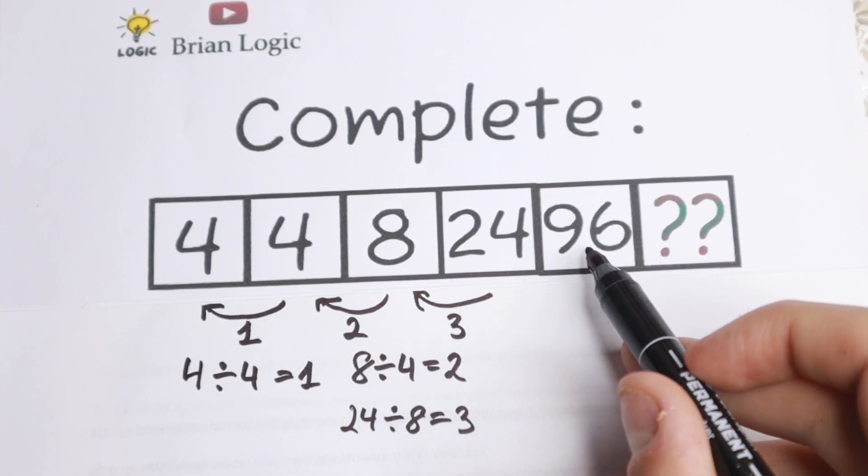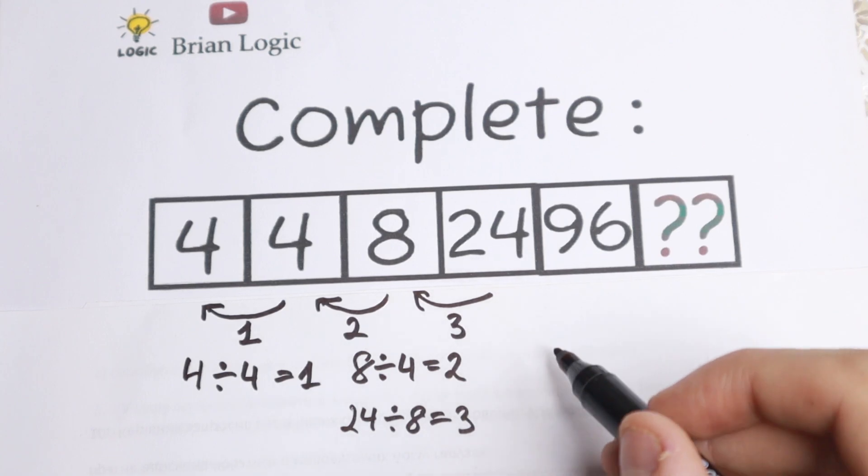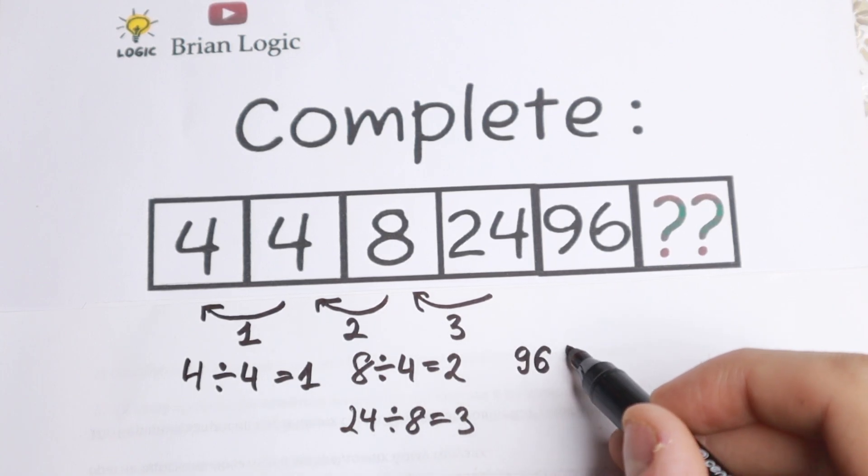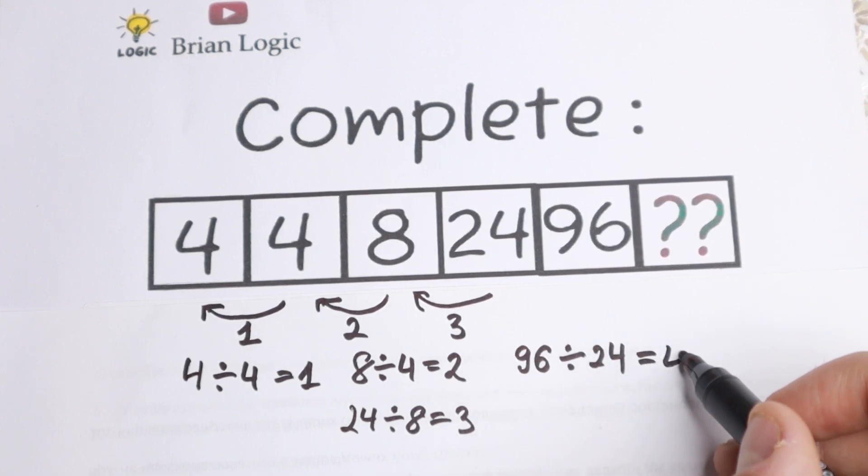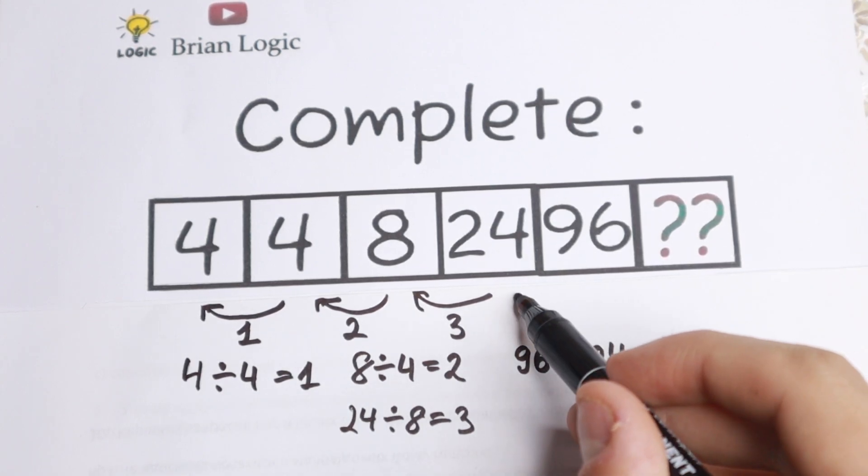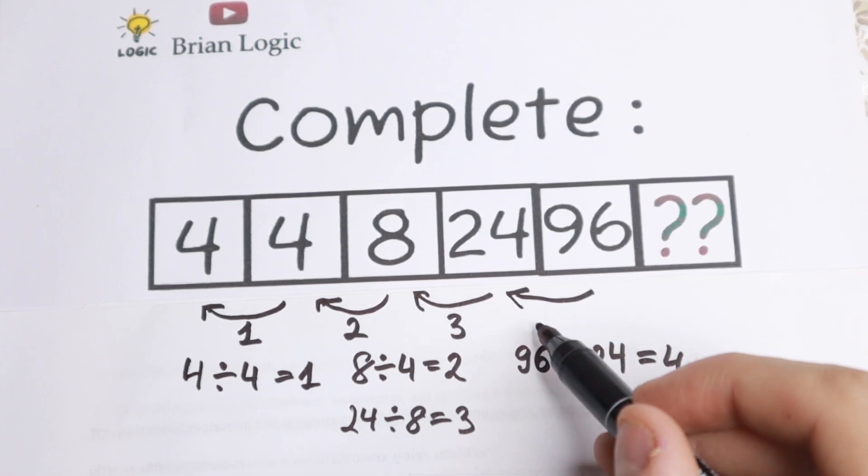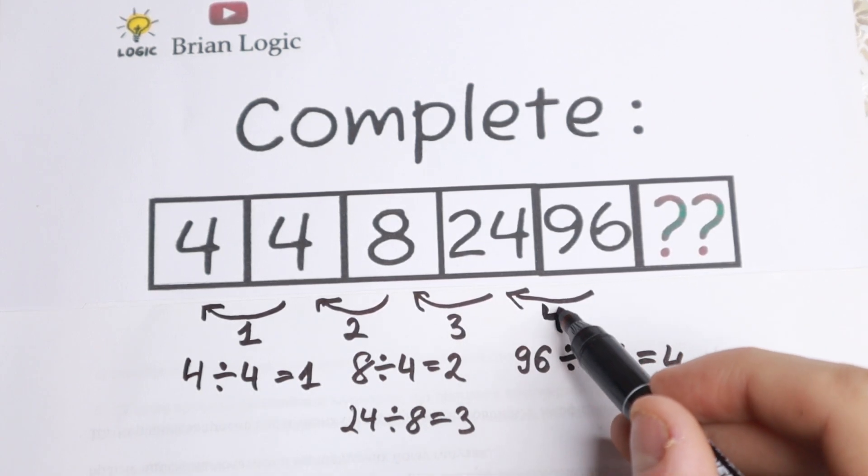So let's divide ninety-six by twenty-four, the fifth number by the fourth one. So ninety-six over twenty-four, if we divide it, we will have four. So as you can see, if we divide the fifth one by the fourth one, we will have four as a result.